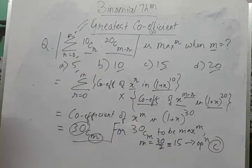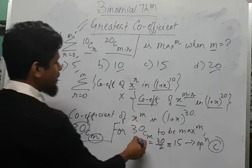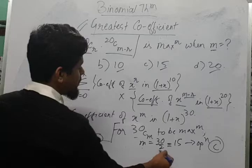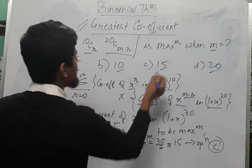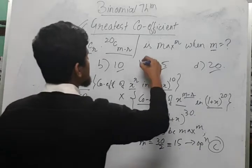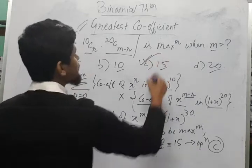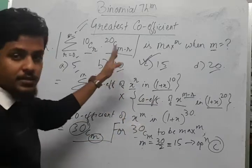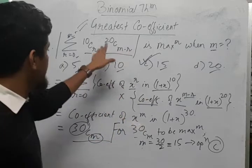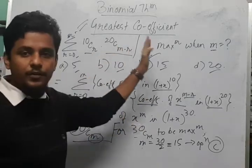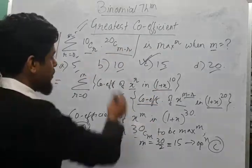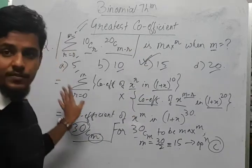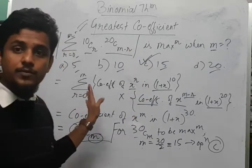So as you can see, a very straightforward answer. For 30Cm to be maximum, we have m equal to 30 by 2, which is 15 — option C — and this is the correct option. This is how we use the concept of greatest coefficient to solve this problem.